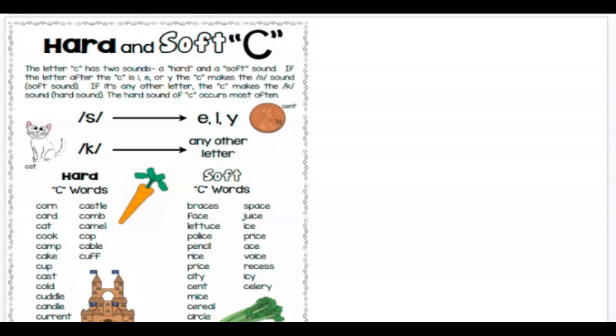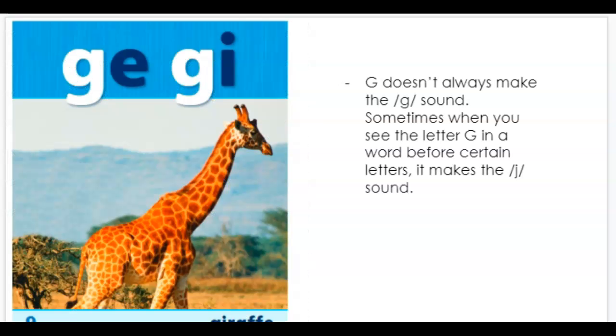C is not the only letter that changes sounds when it has an E, I, or Y around it. G is also a letter that makes a different sound. So G doesn't always make the G sound. Sometimes it makes the J sound, like in the word giraffe.